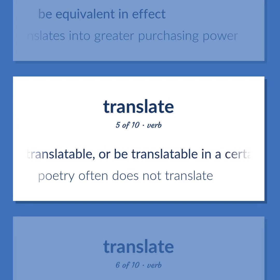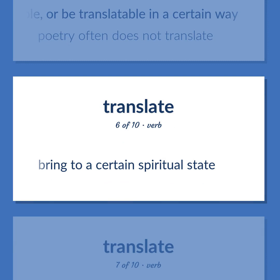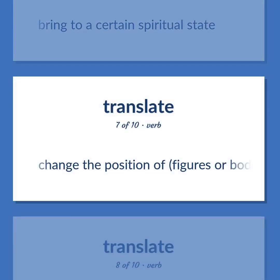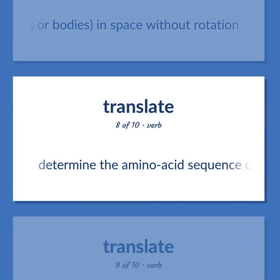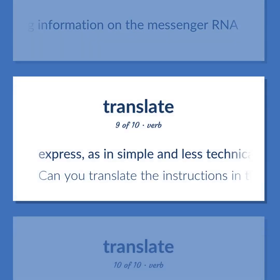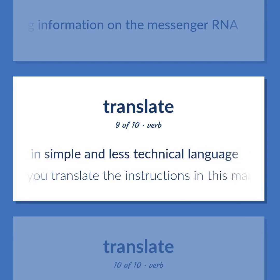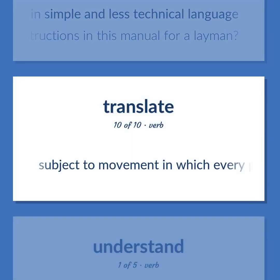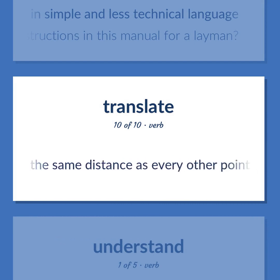Be translatable, or be translatable in a certain way — poetry often does not translate. Bring to a certain spiritual state. Change the position of figures or bodies in space without rotation. Determine the amino acid sequence of a protein during its synthesis by using information on the messenger RNA. Express in simple and less technical language — can you translate the instructions in this manual for a layman?